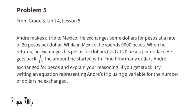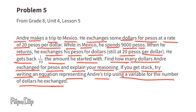Problem number five from Unit 4 Lesson 5: Andre makes a trip to Mexico. He exchanges some dollars for pesos at a rate of 20 pesos per dollar. While in Mexico he spends 9,000 pesos. When he returns, he exchanges his pesos for dollars, still at 20 pesos per dollar, and gets back one-tenth the amount he started with. Find how many dollars Andre exchanged for pesos.